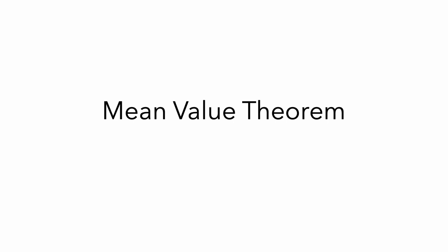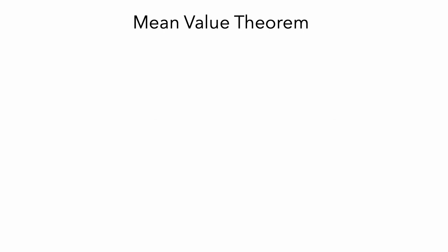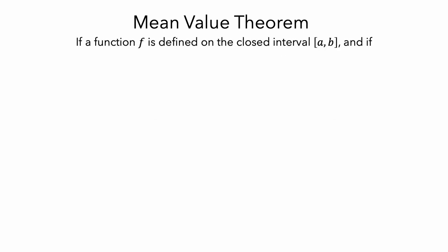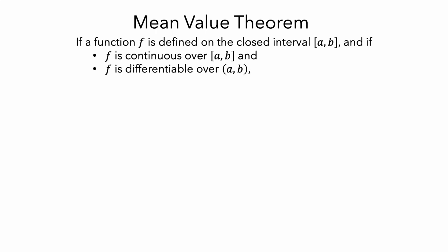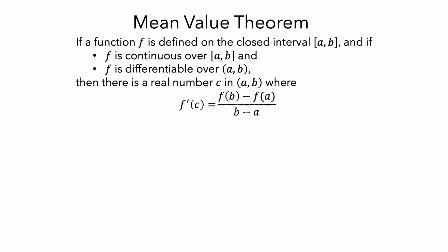In this video, I'll talk about the meaning of the mean value theorem. Here is what the mean value theorem says: if a function f is defined on the closed interval a to b, and if two conditions are satisfied — f is continuous over the closed interval and f is differentiable over the open interval — then there is a real number c between a and b, where the derivative of f evaluated at c is equal to the difference quotient evaluated between x equals a and x equals b.